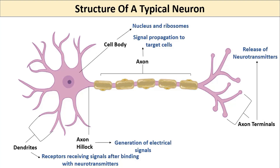So we have covered three types of functions: receiving the signals, propagating them, and passing them to the next neurons or target cells. Now let's talk about specialized structures.